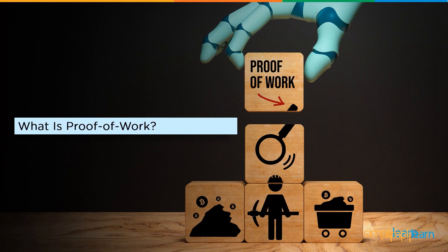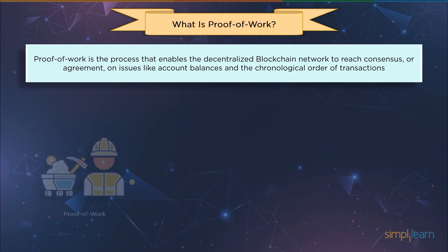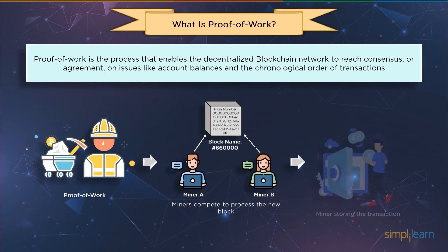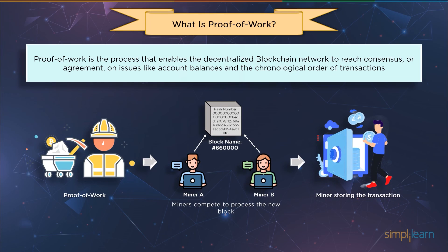Proof-of-work, or POW, refers to a mechanism that discourages pointless or harmful uses of computing resources, such as altering any data stored in a blockchain network, by requiring a not insignificant but doable amount of effort. Though there are several scaling difficulties, it is usually considered to be the most dependable and safe of all the consensus systems. In POW, users compete against one another to use powerful computers to solve extremely difficult computational puzzles, and this process is known as mining. The first person to generate the 64-digit hash gains the privilege of creating a new block, validating transactions, and earning a fixed sum of cryptocurrency, referred to as a block reward.